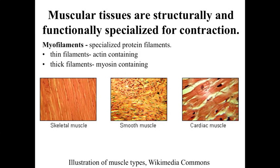With the muscular tissues, we're going to be looking at tissues that are structurally and functionally specialized for contraction. The way they accomplish contraction is that they have specialized protein filaments called myofilaments found within their cytoplasm. We have thin filaments, which are primarily actin and actin-associated proteins, and thick filaments, which are myosin and myosin-affiliated proteins. By the interaction of these thick and thin filaments, we allow for controlled contraction to occur — controlled shortening of the myofilaments and, in doing so, shortening and contraction of the muscle.